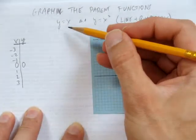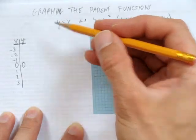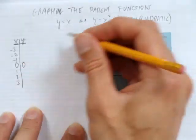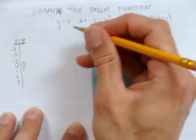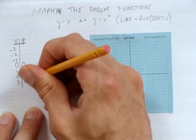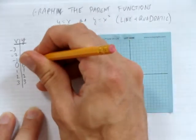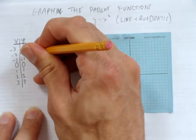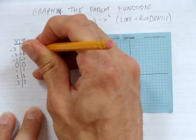The line is easy in that whatever you chose for x, y is just the same thing. So if x equals 1, y equals 1. x equals 2, y equals 2. x equals 3, y equals 3. And similarly, for the negative numbers, whatever x is, y is the same thing.